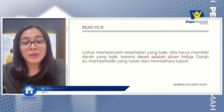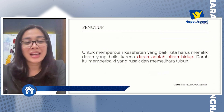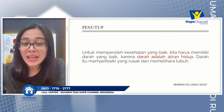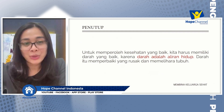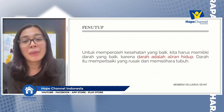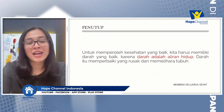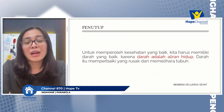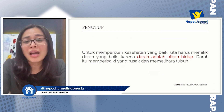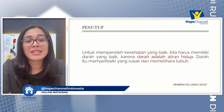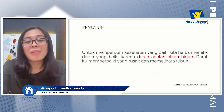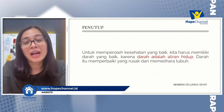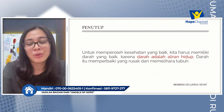Saya ingin mengambil kutipan dari buku Membina Keluarga Yang Sehat, di mana dikatakan bahwa untuk memperoleh kesehatan yang baik, kita harus memiliki darah yang baik, karena darah adalah aliran hidup. Darah itu memperbaiki yang rusak dan memelihara tubuh. Kita ketahui bersama bahwa darah dalam tubuh kita ini sangat penting. Darah adalah aliran hidup kita, apabila kita menjaga aliran darah kita dengan baik, maka dapat memperbaiki segala sesuatu yang rusak di dalam tubuh kita, atau bahkan dapat menjaga dan memelihara tubuh kita menjadi lebih sehat dan bugar.